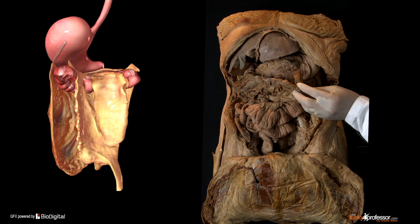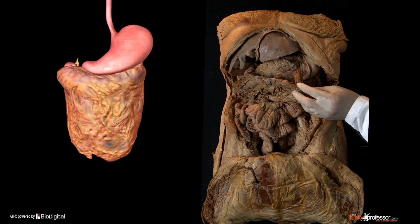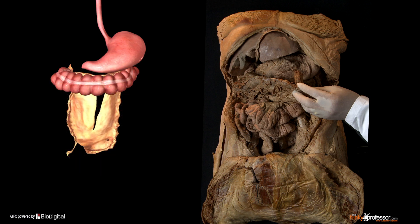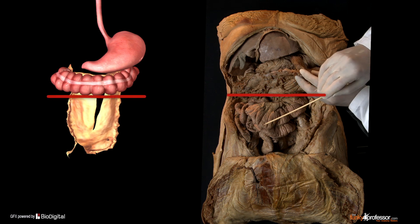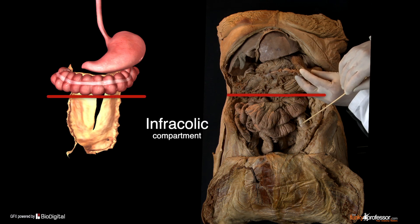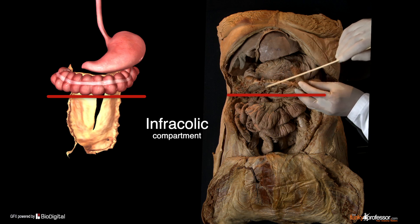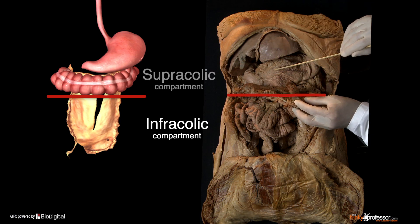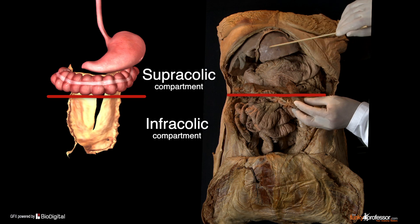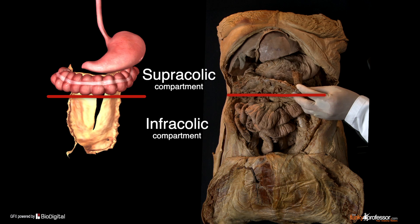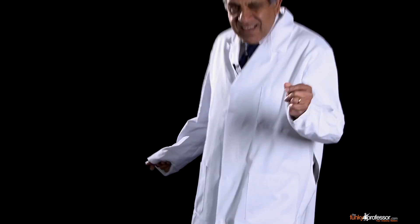The transverse mesocolon serves to divide the abdominal or peritoneal cavity into two principal compartments. Below the transverse mesocolon is the infracolic compartment, or inframesocolic compartment, and above it is the supracolic compartment, or supramesocolic compartment. I shall hereafter refer to them as the infracolic and supracolic compartments. Let's start by identifying the contents of each compartment, beginning with the supracolic compartment.